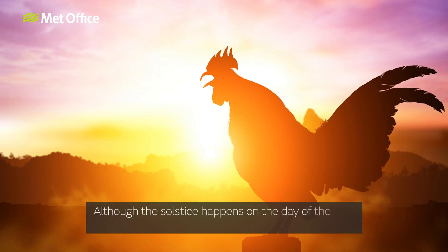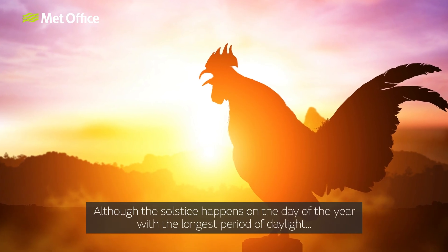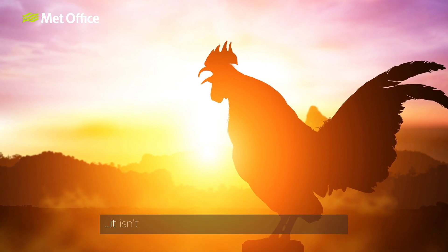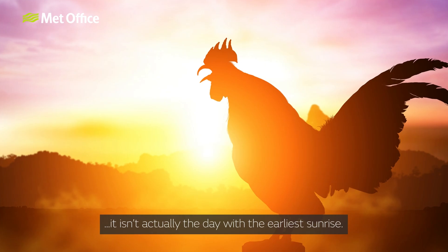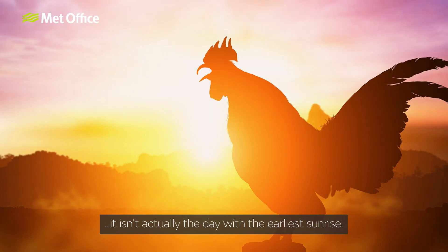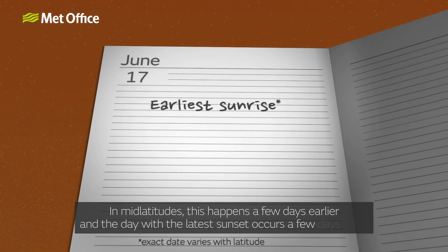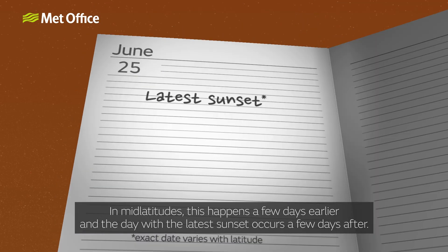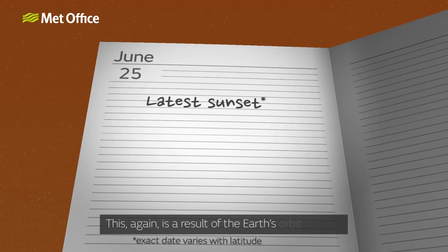Although the solstice happens on the day of the year with the longest period of daylight, it isn't actually the day with the earliest sunrise. In mid-latitudes this happens a few days earlier, and the day with the latest sunset occurs a few days after. This again is a result of the Earth's orbit and tilt.